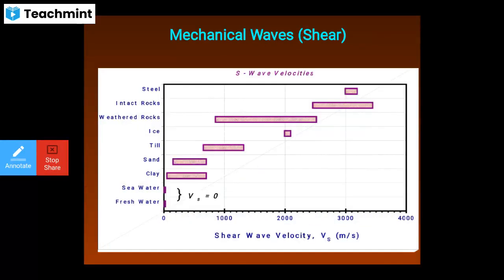Similarly, the shear wave velocity Vs in meters per second is shown for the same materials: fresh water, sea water, clay, sand, ice, weathered rocks, intact rocks, and steel. The shear wave velocity varies across these materials just as the compression wave velocity does.